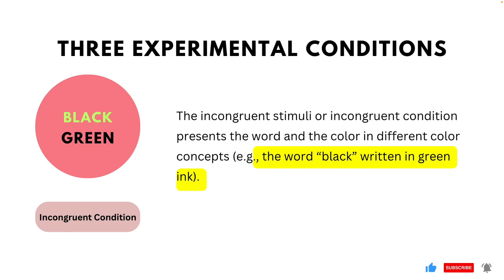Finally, the incongruent stimulus presents the word and the color in different color concepts — for example, 'green' written in black ink, or 'black' written in green ink, as presented in the schematic.